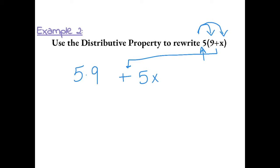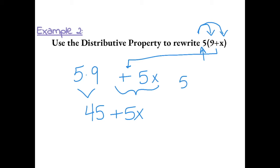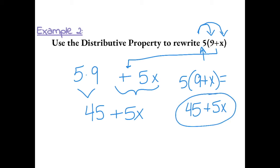Now we can simplify. 5 times 9 becomes 45, bring everything else down, plus 5x. So 5 times the sum of 9 plus x is equal to 45 plus 5x by the distributive property.